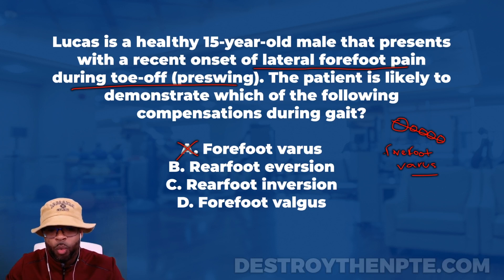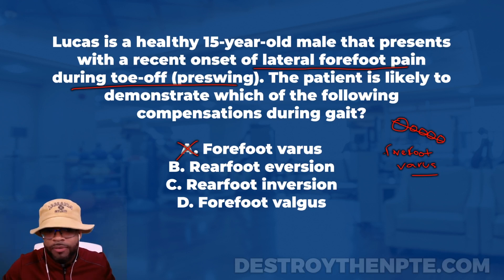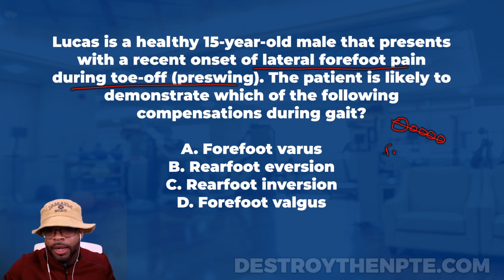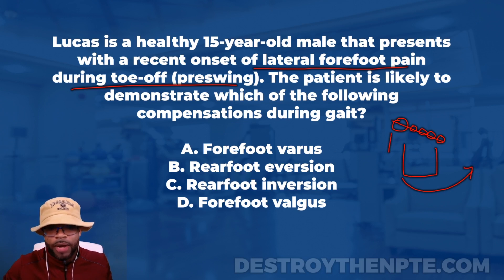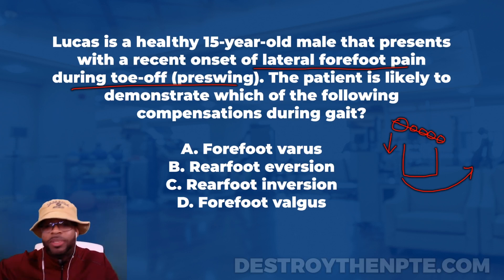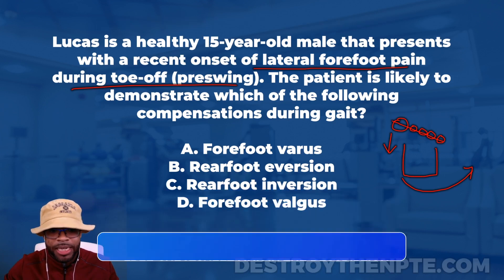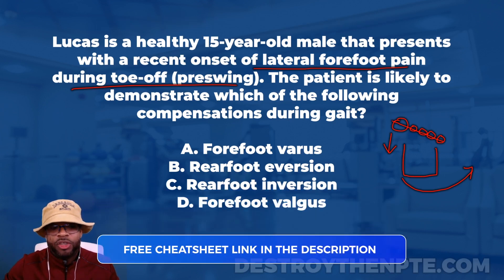That opposite direction is called rearfoot eversion. I'm drawing out the calcaneus right now — the calcaneus swings out in order to bring the big toe down to the ground. The rearfoot goes in the opposite direction into rearfoot eversion to bring that big toe down. That is the type of compensation we would expect to see. So A was not correct, but B looks like a great answer.